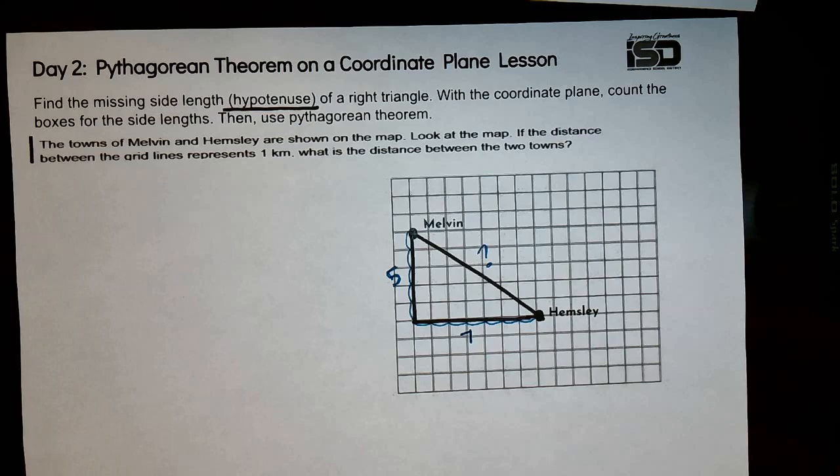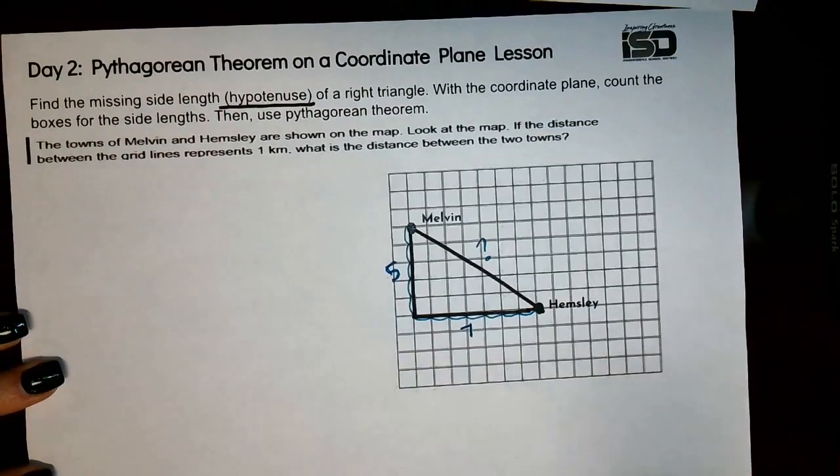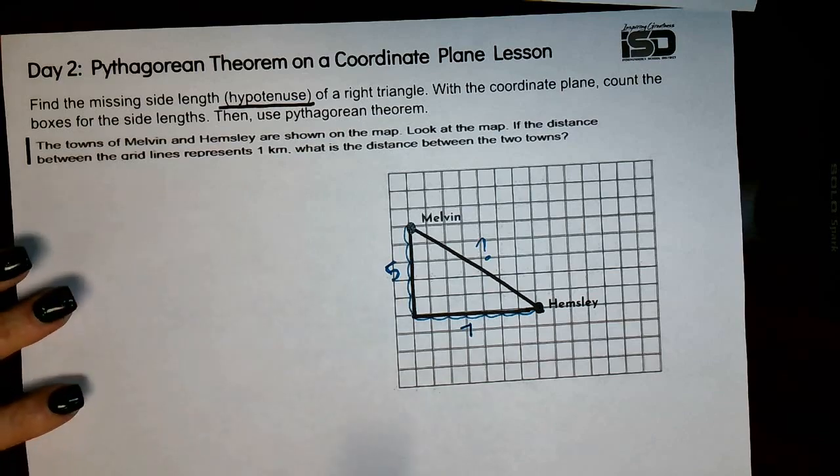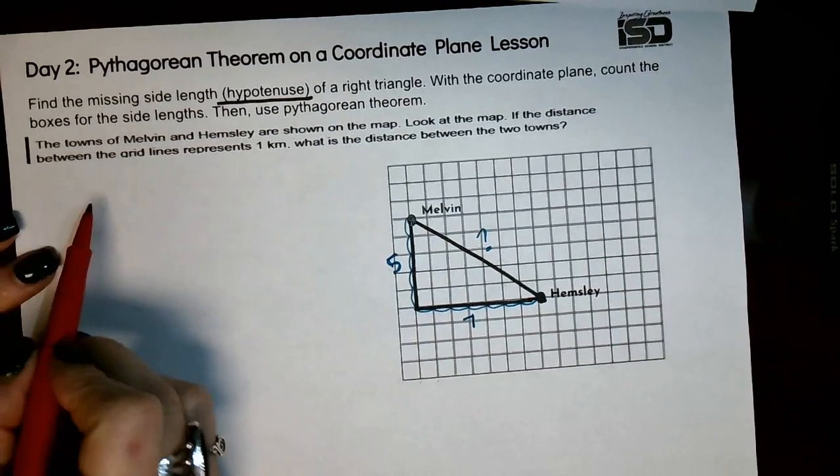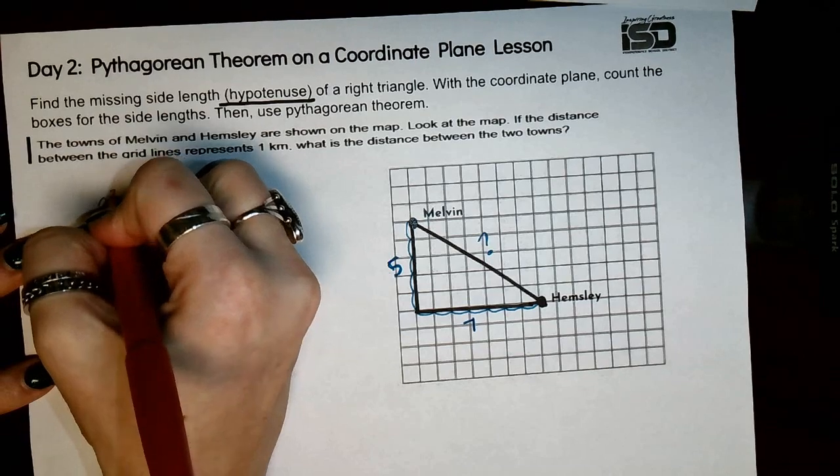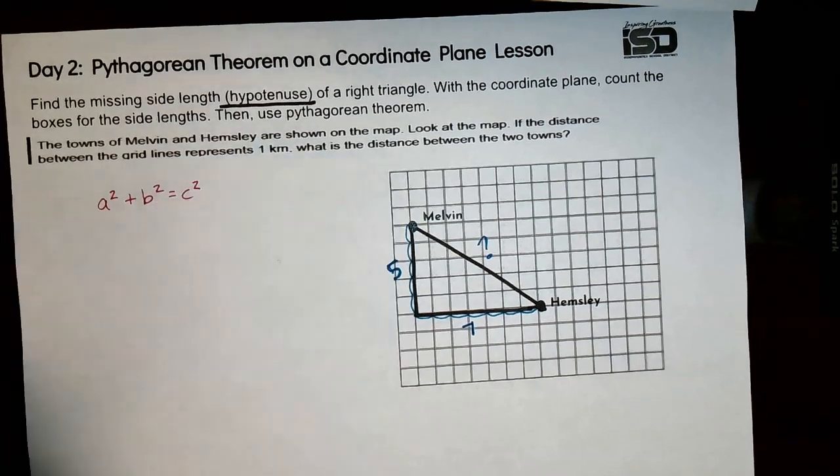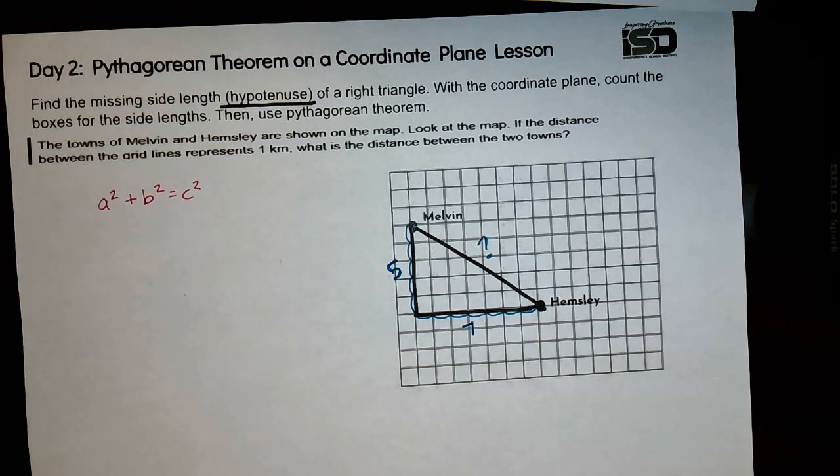So we're going to go ahead and do the work over here. And again, this follows the document that you have. So over here, we're first going to write out the actual formula, a squared plus b squared equals c squared.